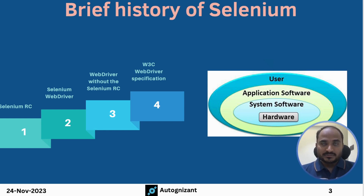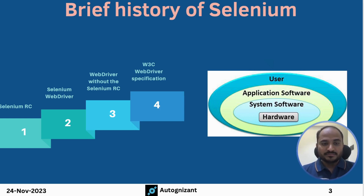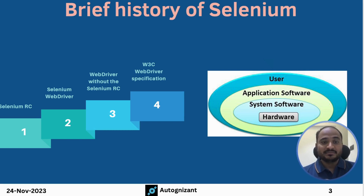Over time, Selenium expanded and Simon Stewart started working on a tool called Selenium WebDriver, which focused on using native libraries for automation purposes. Looking at the hierarchy: the first version is Selenium RC (Selenium 1.0), and later it became Selenium WebDriver (Selenium 2.0). Selenium 2.0 had both Selenium RC and Selenium WebDriver. Later they released Selenium 3.0 — a more robust and flexible version that only consisted of Selenium WebDriver, without Selenium RC.